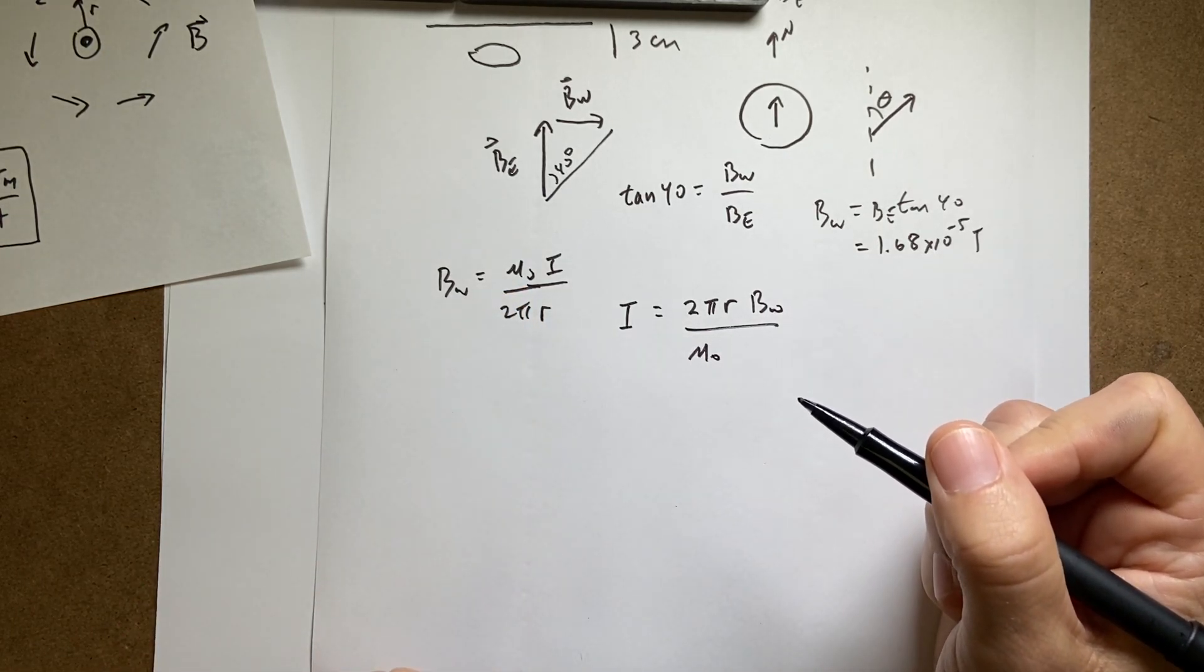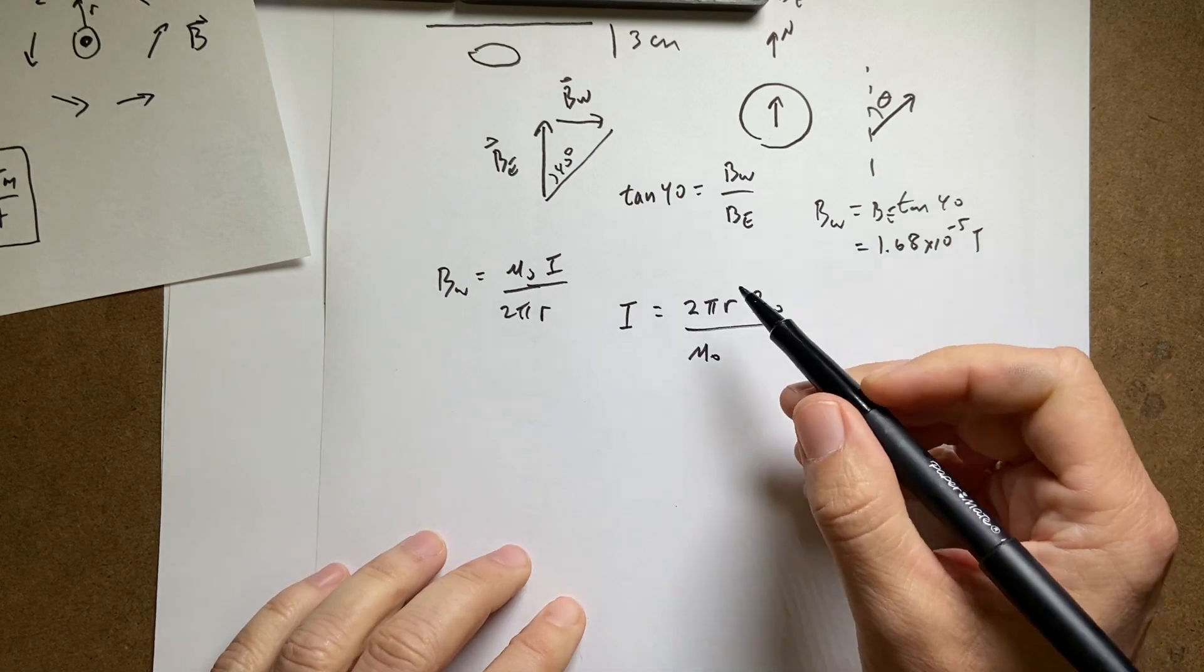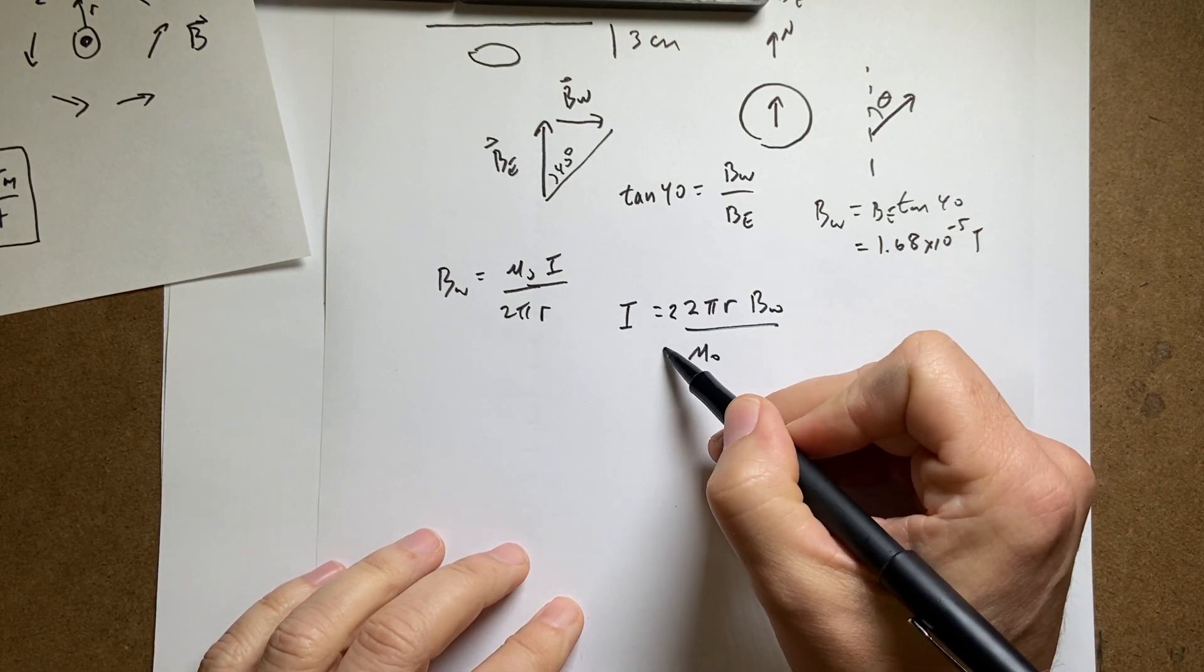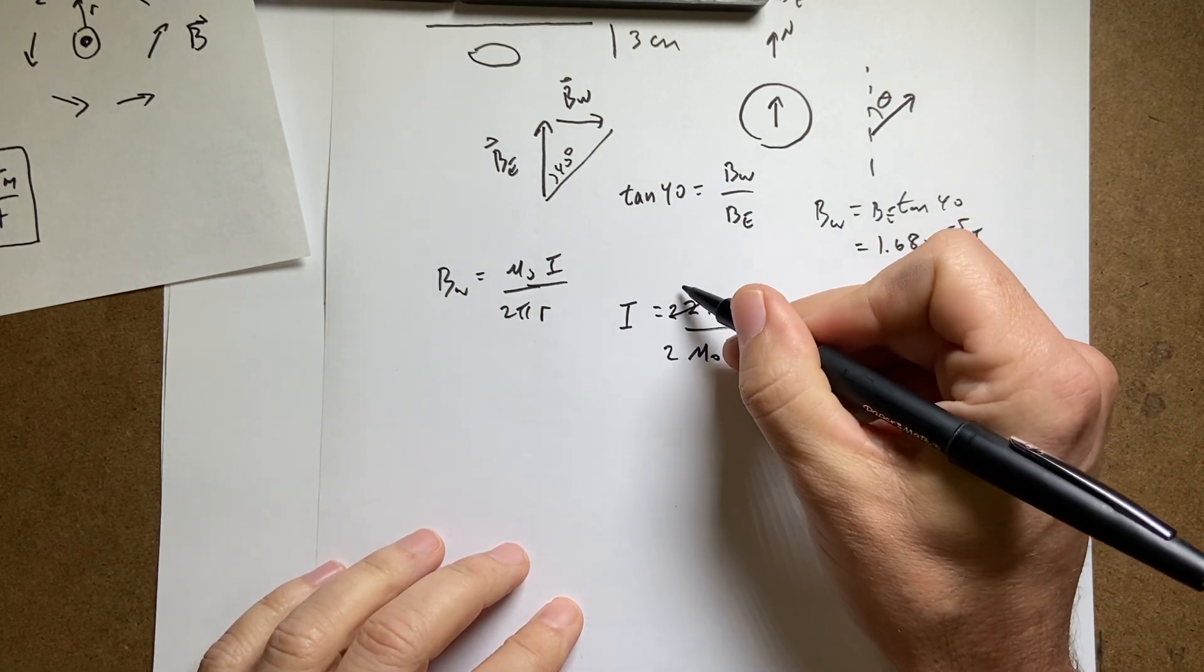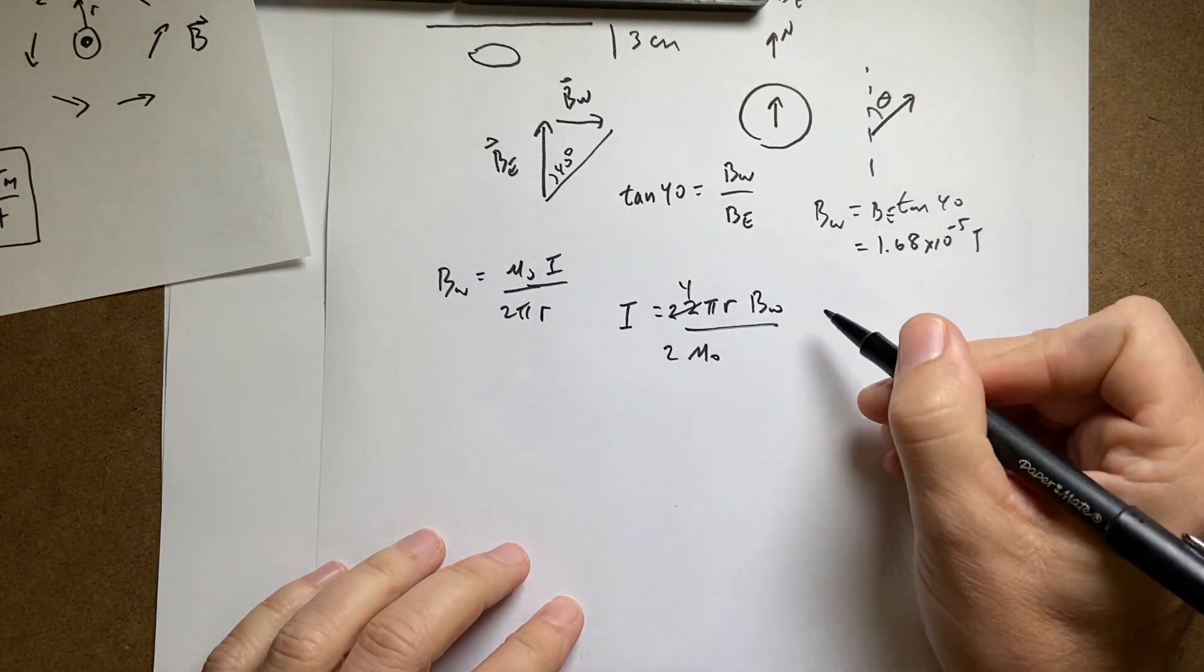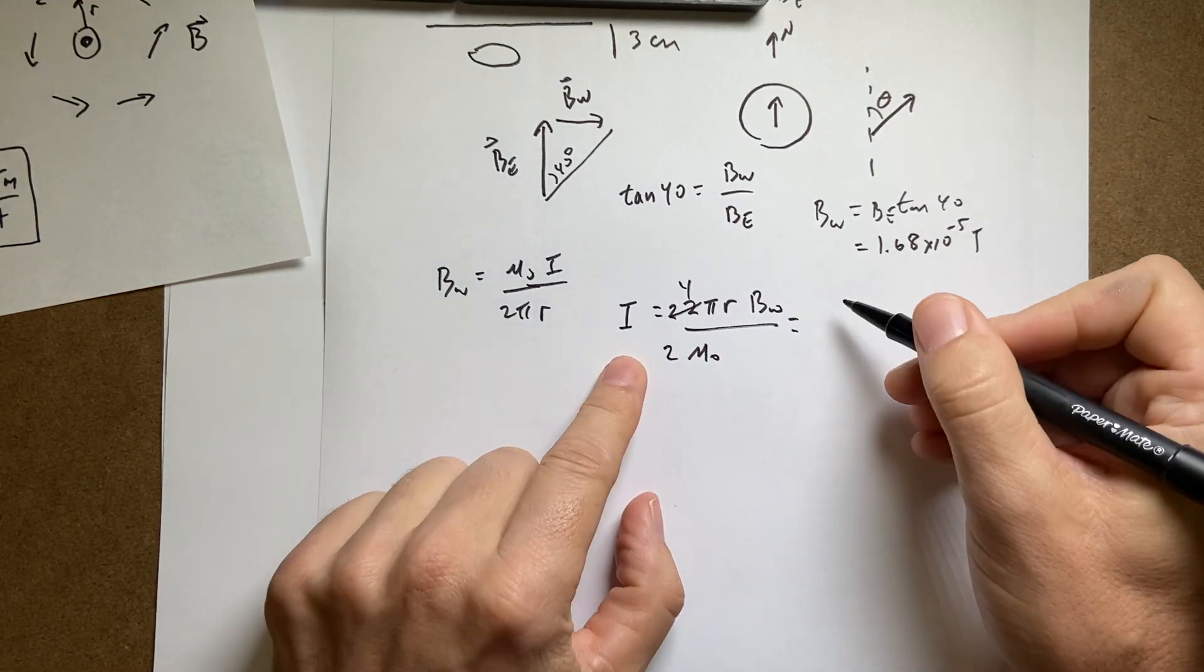And, you know, we can do this little thing where I multiply the top and the bottom by 2. And this gives me 4 pi. And so now when I put things in there, I get this. I have 4 pi.